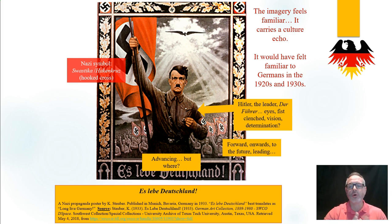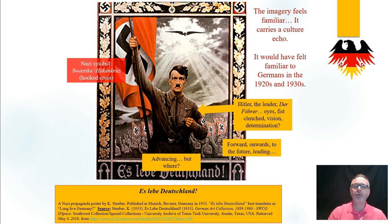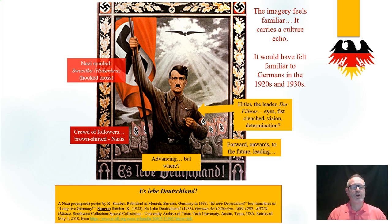Another feature that would have leapt out at you is the swastika, or Hakenkreuz — the Hooked Cross — the symbol of the Nazi Party. Very prominently displayed, and displayed on multiple occasions in the imagery. It's even displayed in the frame at the top three times; see if you've identified those. In the background we have a crowd of followers, clearly followers of Hitler. They're wearing brown shirts — this is our brown-shirted Sturmabteilung following Hitler, the Nazis. Hitler, the Führer, leading his followers — leading them where?